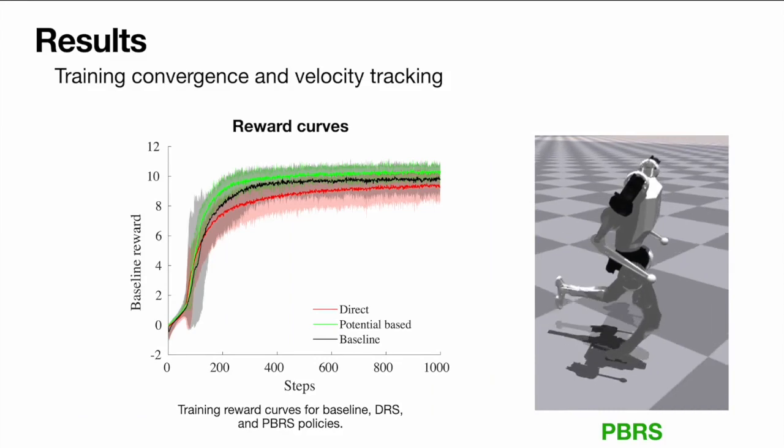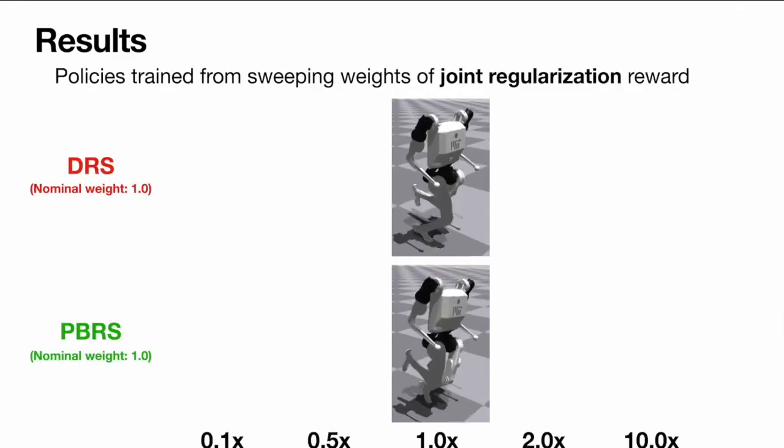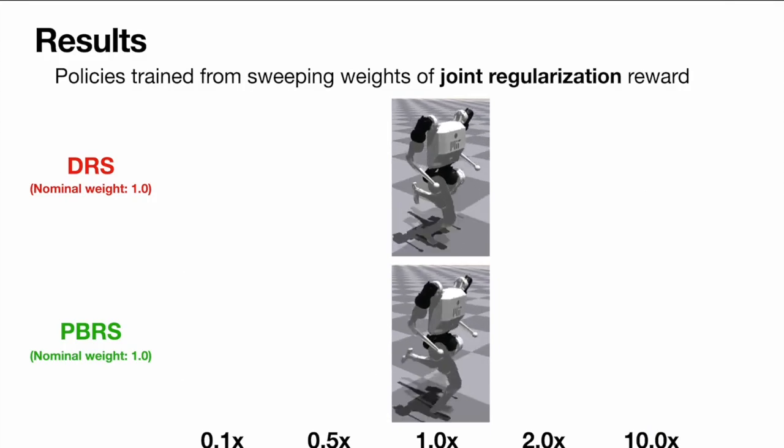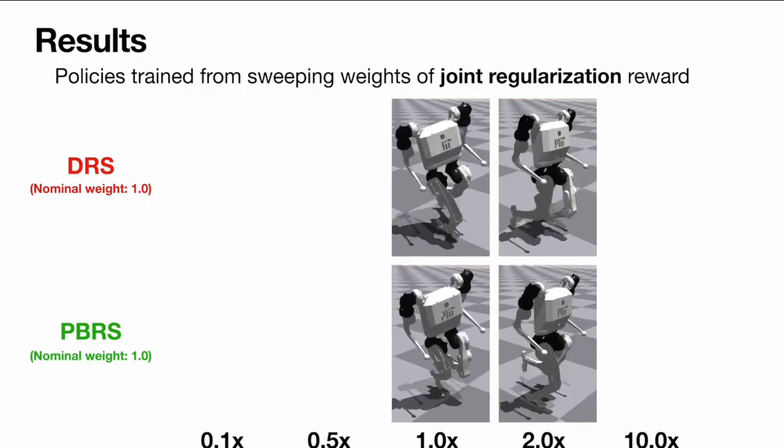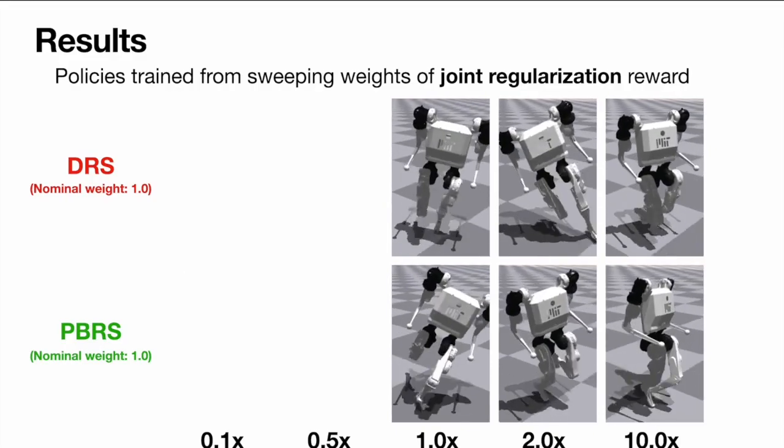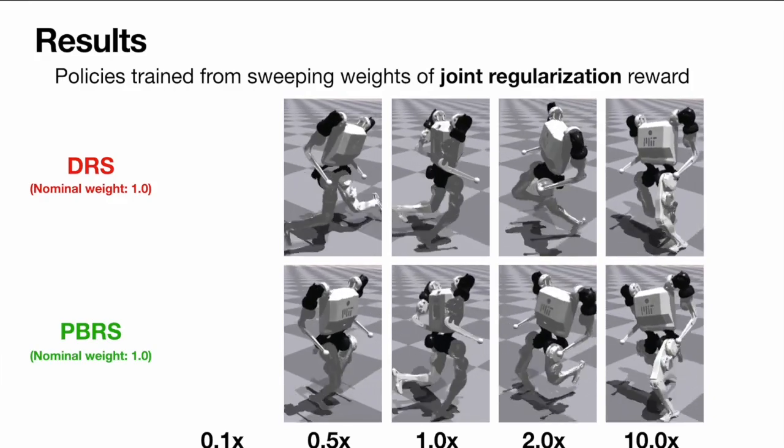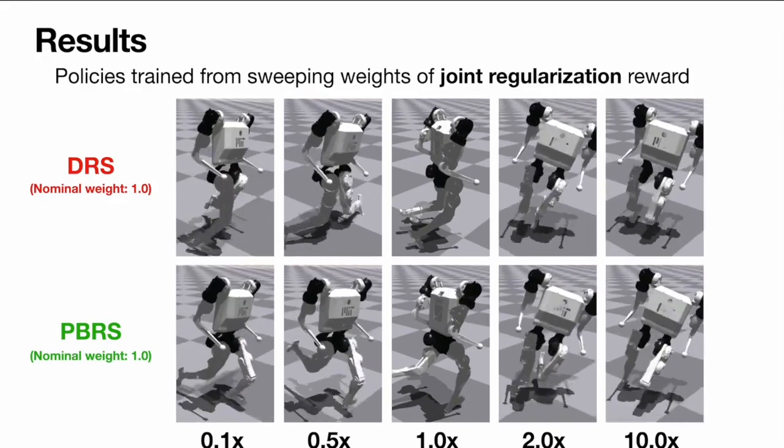Furthermore, the rewards experienced during learning showed less variance when using PBRS. When tuned well, both DRS and PBRS policies perform similarly. As we increase the weight, however, we see that PBRS policies do not change significantly, whereas DRS policies do. Decreasing the weights can even lead to clearly undesirable behaviors with DRS.